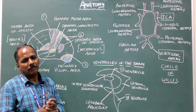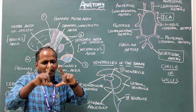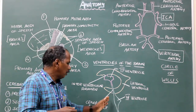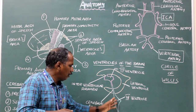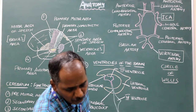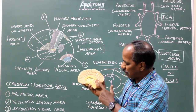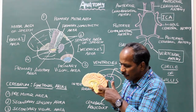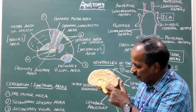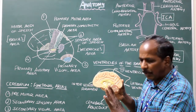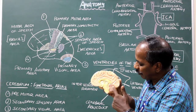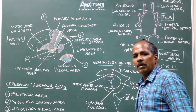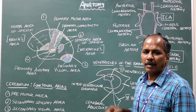Cerebral aqueduct leads to the fourth ventricle. It is a rhomboid shaped cavity present between the midbrain and pons anteriorly and the cerebellum posteriorly. The fourth ventricle continues as the central canal of the spinal cord.